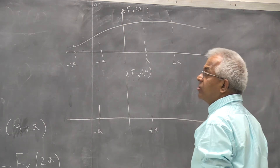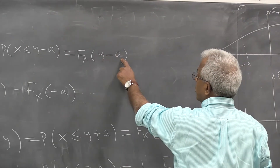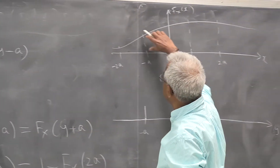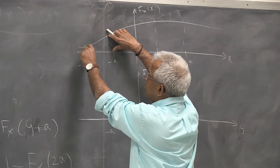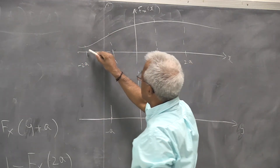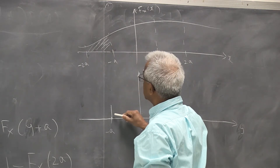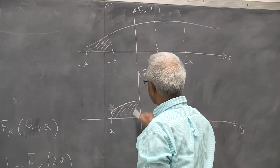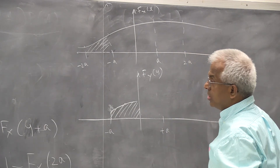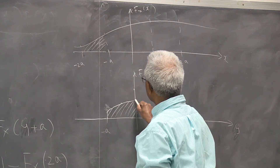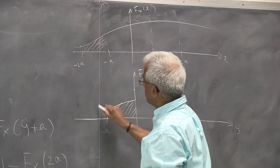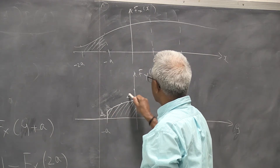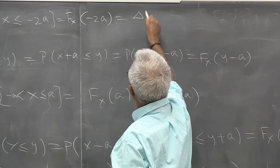Between minus a and zero, this function behaves like FX(y minus a). So if you put y equal to zero you get FX(minus a), and if you put y equal to minus a you get FX(minus 2a). Then at y equal to zero there is a jump discontinuity — let's call this jump delta 1. And there is another jump here, delta 2.